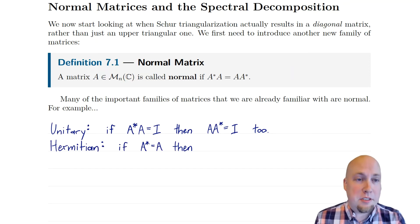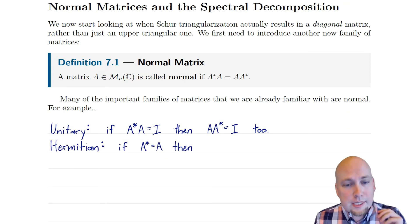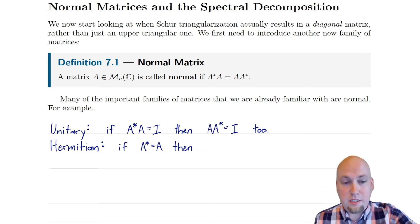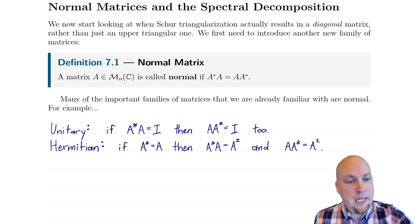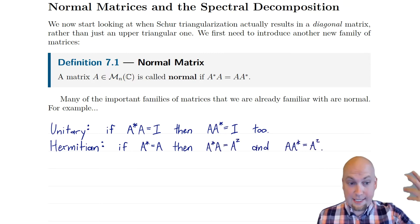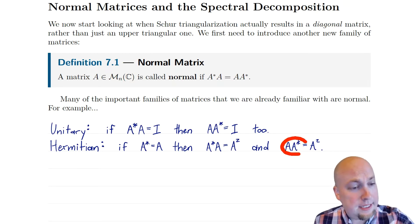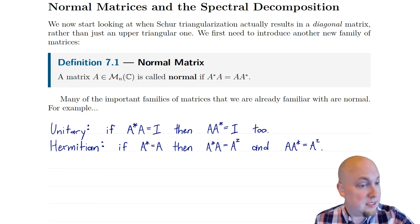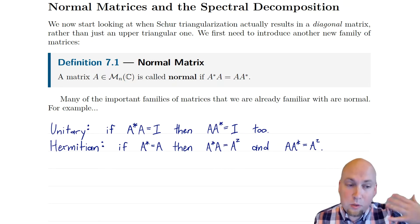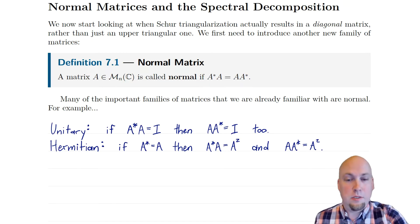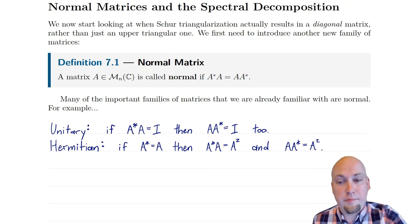For example, Hermitian matrices: if A equals its own conjugate transpose, then we say that's Hermitian. In this case, A*A would just equal A squared — it's A times itself. And similarly, if you multiply in the other order, A* equals A, so this is also just A squared. So they both equal A squared, meaning they're equal. Every Hermitian matrix is normal.